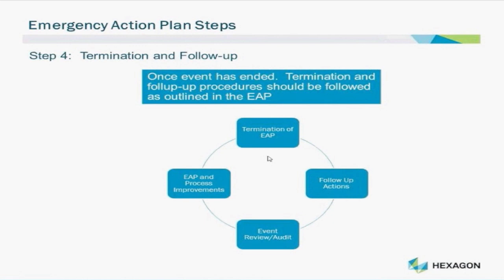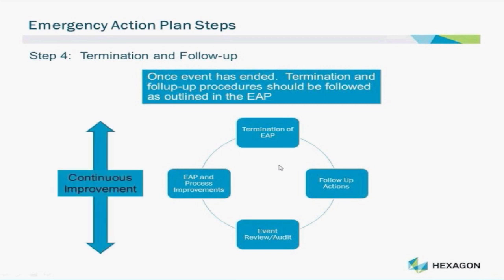The final step within an Emergency Action Plan is the termination of the action plan and the follow-up required after the emergency is completed. After an emergency, there will nearly always be a list of follow-up actions which need to be carried out — usually relating to cleanup or bringing the environment and equipment back to a normal working state. After an EAP has been activated and followed, it is important that a full audit and review is done of that EAP. The review should include adding more relevant tasks within the EAP to make it more effective, thus providing continuous improvement in EAPs for the facility.